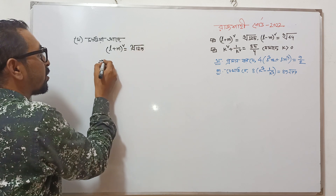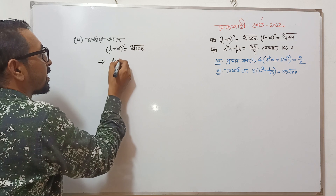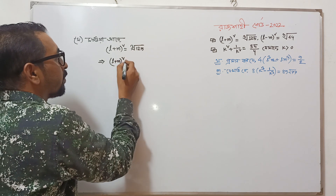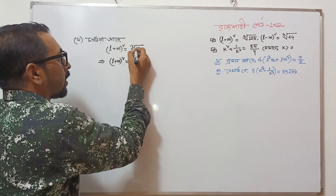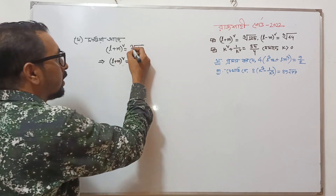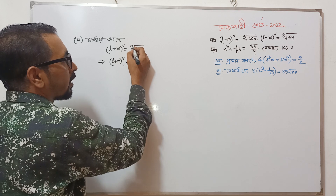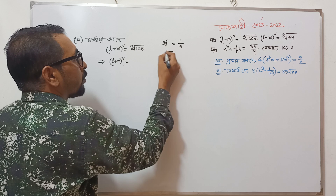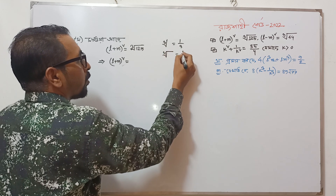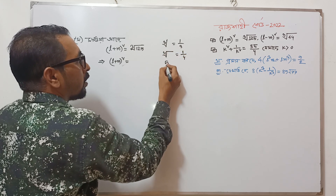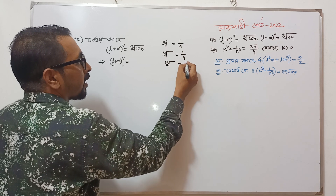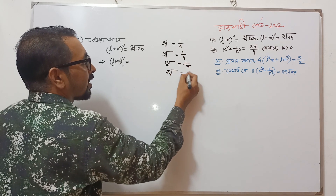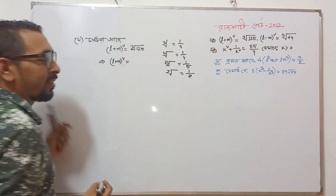L plus M whole square equal to — we have a 3 root, and there is a 5 root, and a 7 root — so 1 divided times 7.